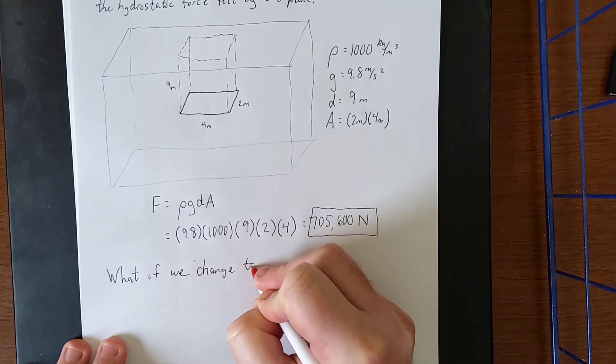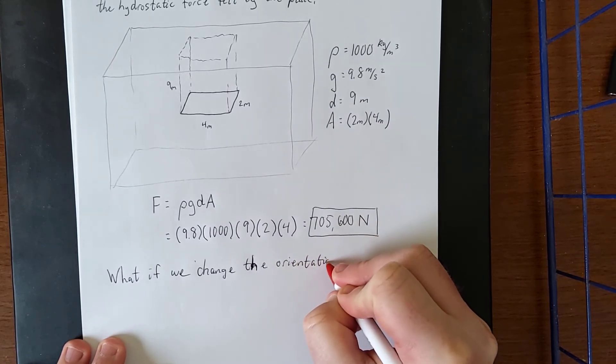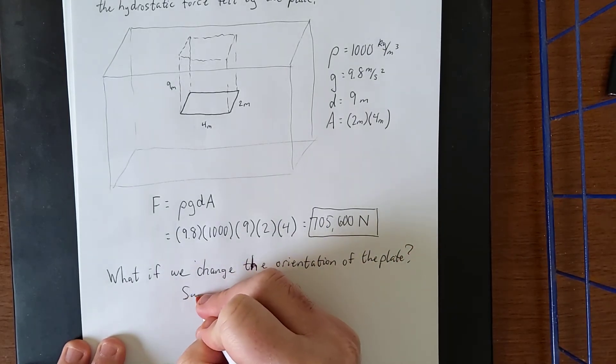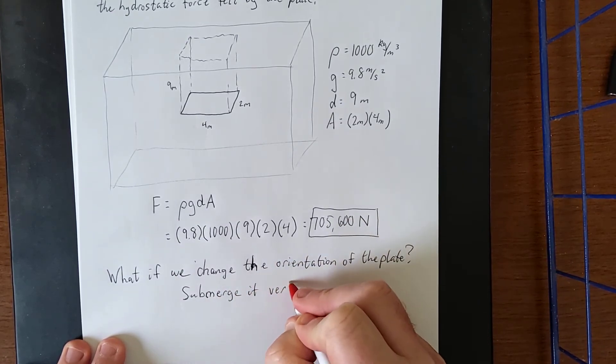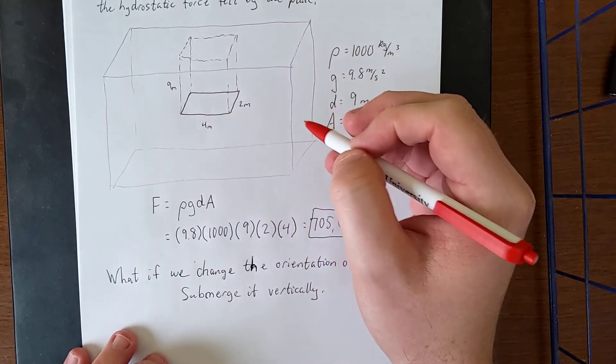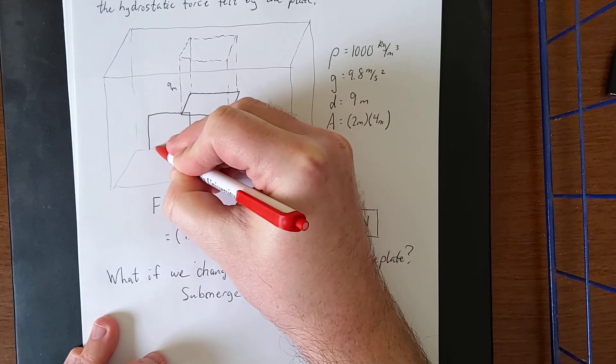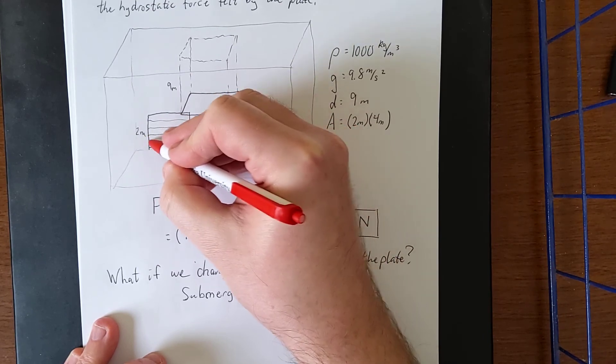What if we change the orientation of the plate? And here's something that you'll see frequently: submerge it vertically. So if you submerge the plate vertically, now different parts of the plate are going to be at different depths. That is to say, instead of this orientation, suppose that I submerged it in a way where the plate was parallel to the front wall, 2 meters like this and 4 meters like this, where different parts of the plate are now at different depths.